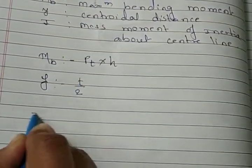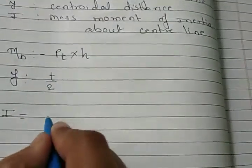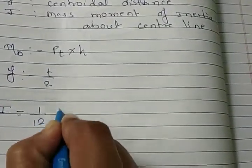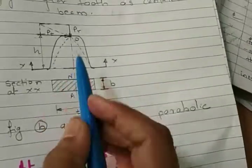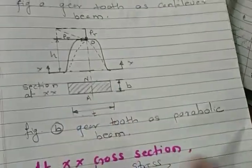And lastly, mass moment of inertia of this rectangle cross section. So it is 1 upon 12 bt cube. So we have the dimension of this rectangle cross section. It is 1 by 12 bt cube.